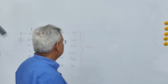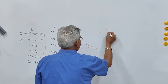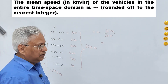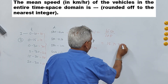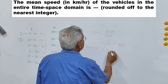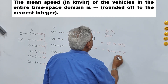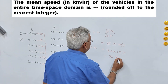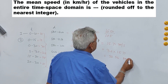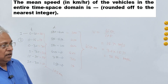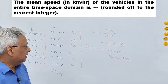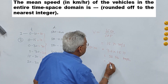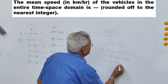Therefore, the mean speed = 1650 / 105 = 15.7 m/s. Converting to km/h by multiplying by 3.6 gives 56.57 km/h. Rounded off to the nearest integer, since it is 56.57, the answer is 57 km/h.